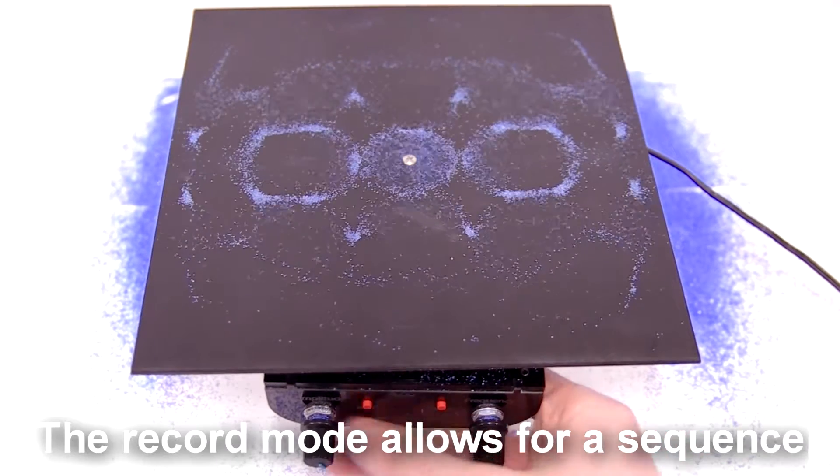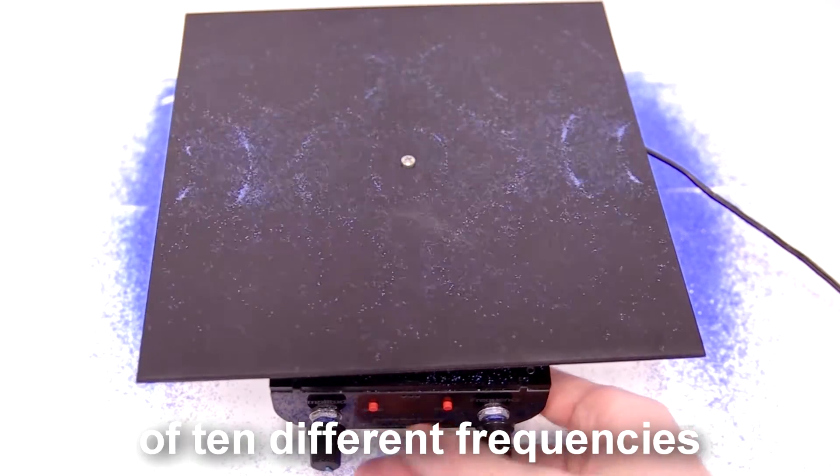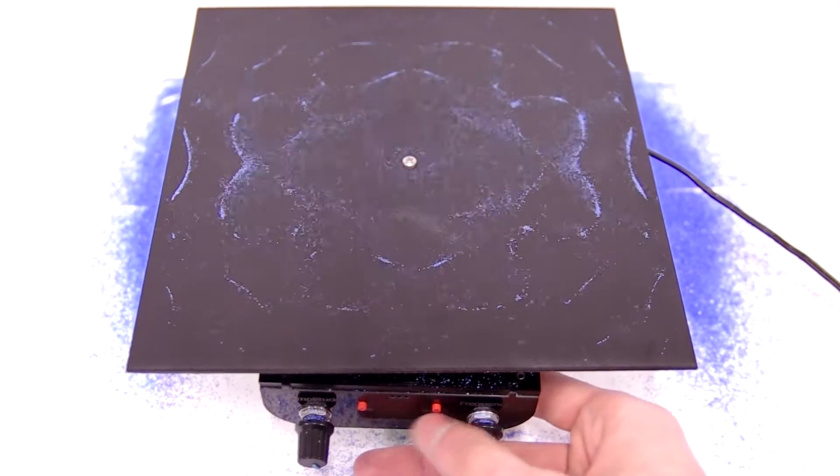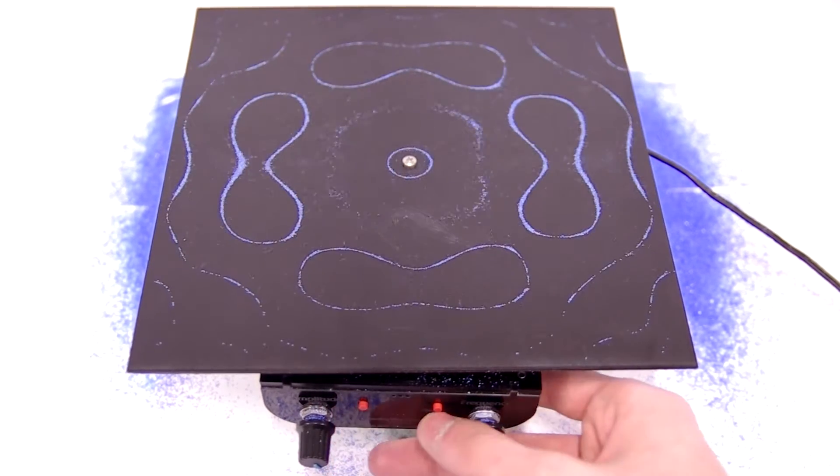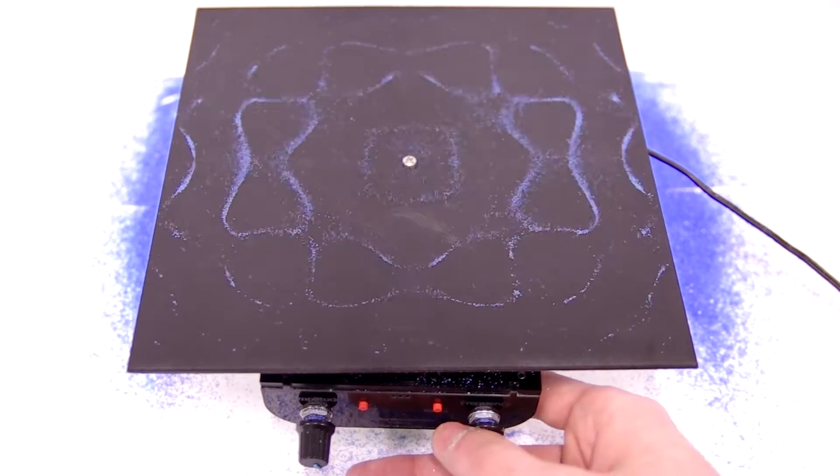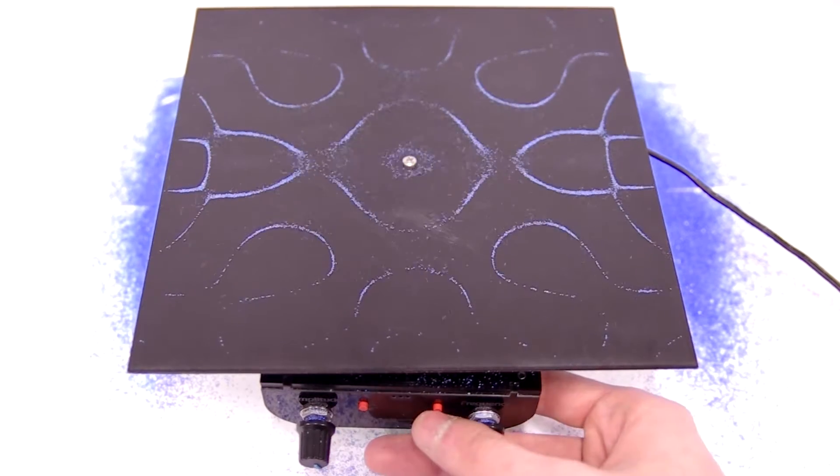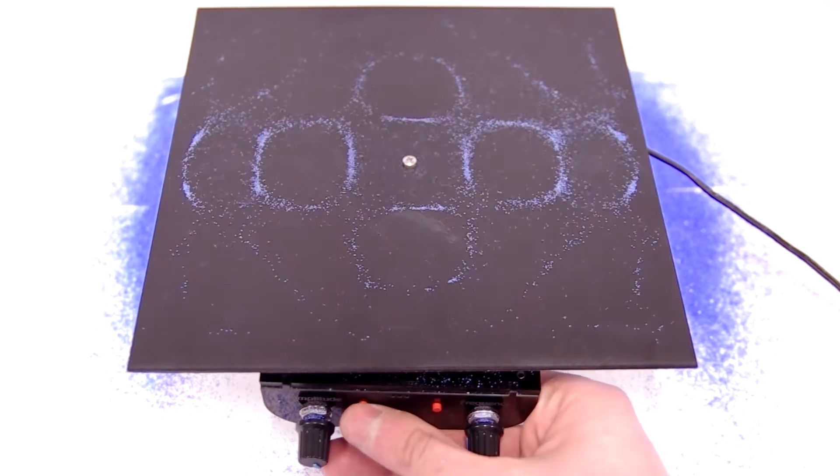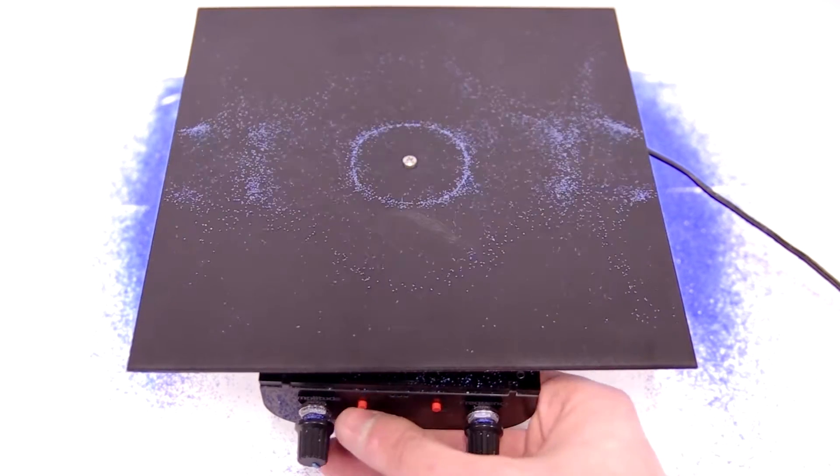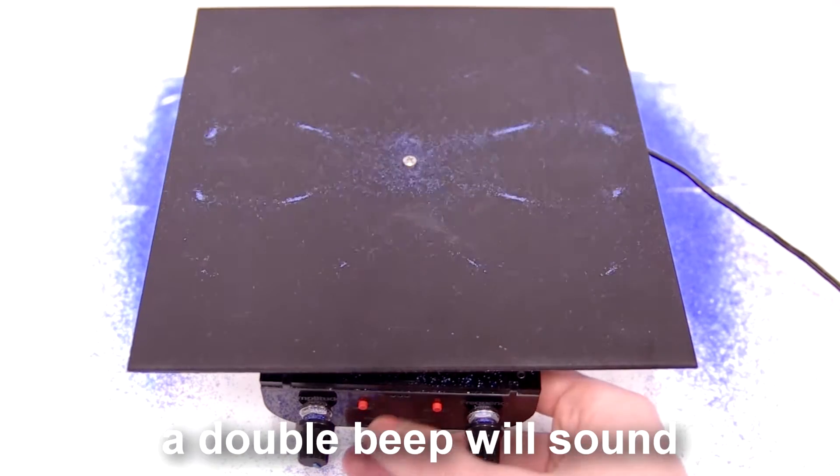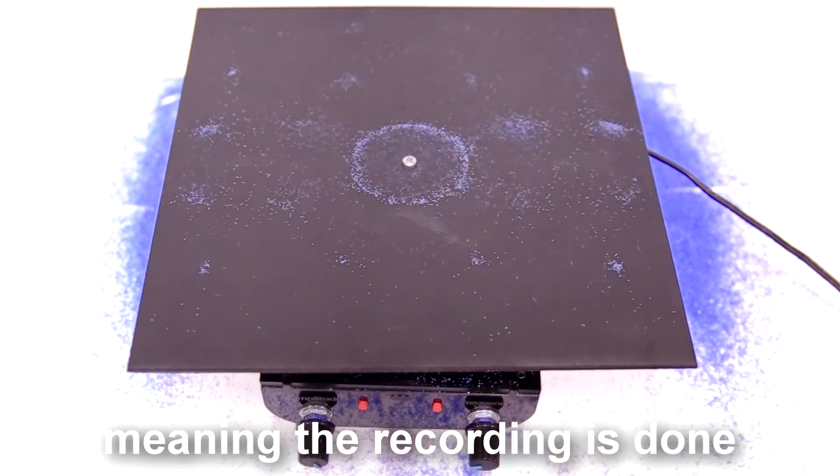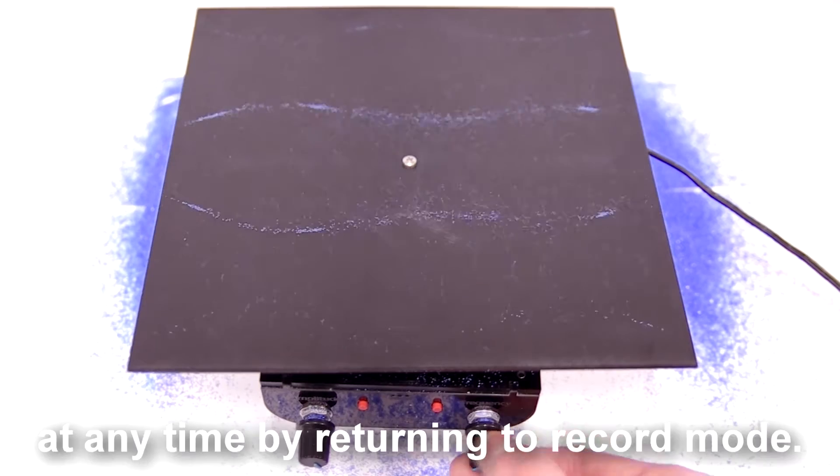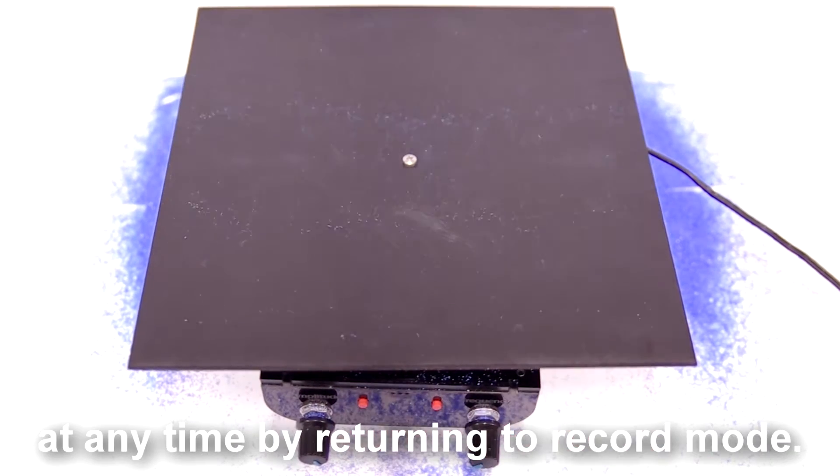The record mode allows for a sequence of ten different frequencies to be played back. After ten beeps are heard a double beep will sound meaning the recording is done and can be played back at any time by returning to record mode.